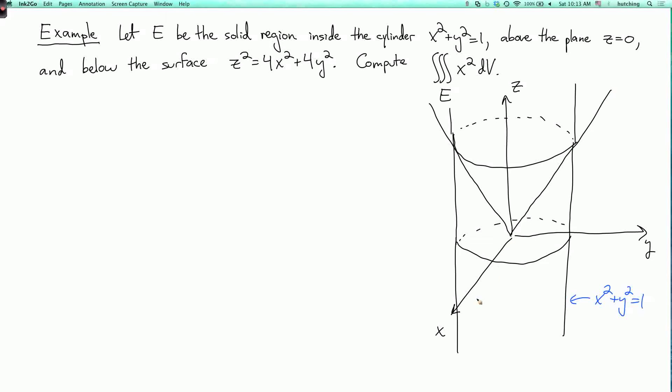And there's also a lower half of the cone, but that's not going to be relevant for this problem because we only want to look at things above the plane z equals 0. So this is z-squared equals 4x-squared plus 4y-squared, the upper half.